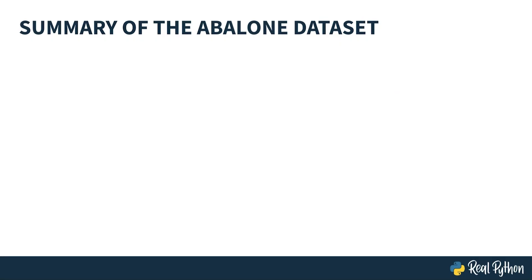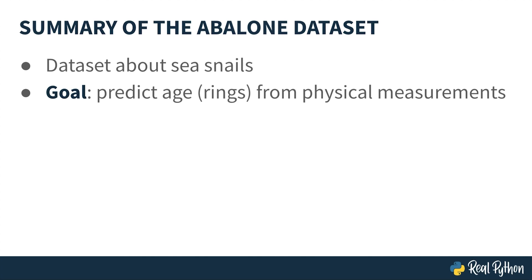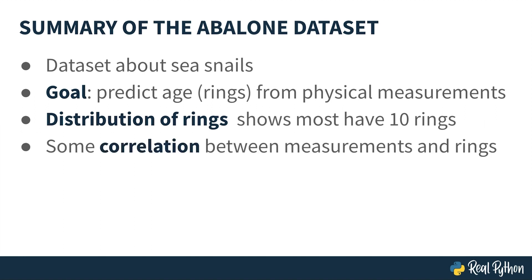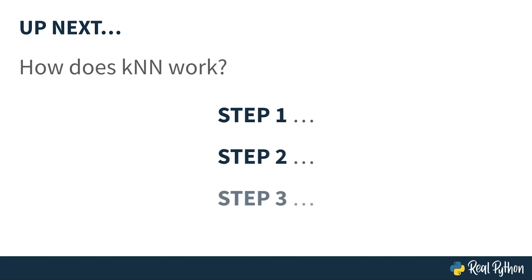In this lesson, you learned about the abalone dataset, which is publicly available data about a type of sea snails. The eventual goal is to predict an abalone's age, or rings, from its physical measurements using a KNN model. You explored the dataset using pandas, plotted the distribution of the rings — noting most abalones have about 10 rings — and calculated correlations between the physical measurements and rings, finding they are at least somewhat related. In the next lesson, find out how KNN actually works through a step-by-step approach.